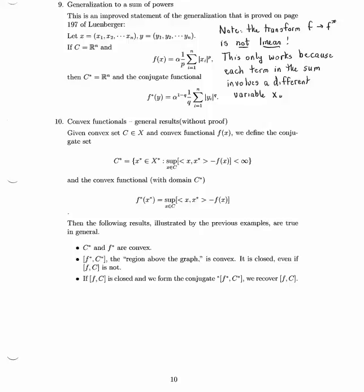And we've got a function f of x, which is alpha over p. This is my way of rewriting it. Times the sum of x sub i absolute value to the pth power. Sum from i equals 1 to n.